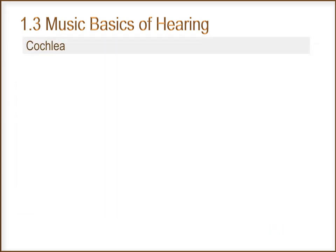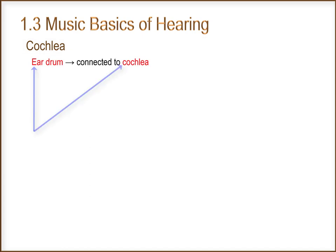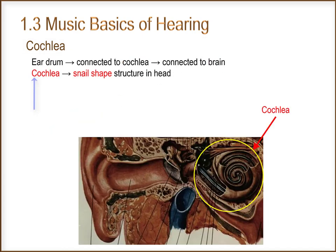We'll start with the cochlea. The eardrum is connected to a cochlea, and the cochlea is connected to the brain. The cochlea is a snail-shaped structure in our heads.